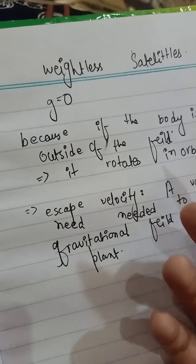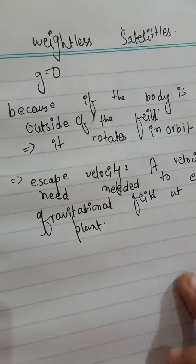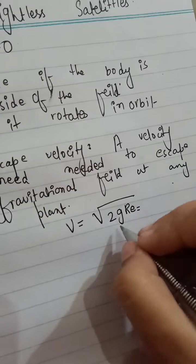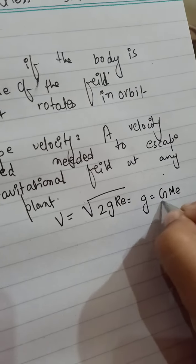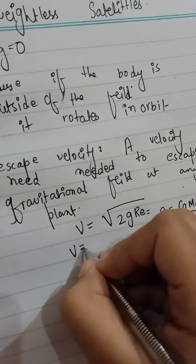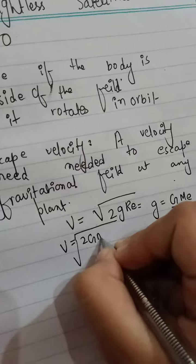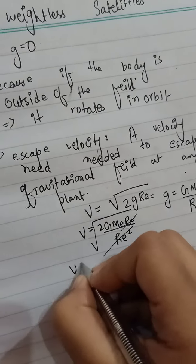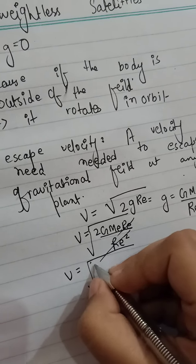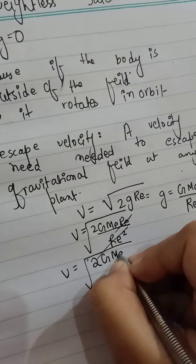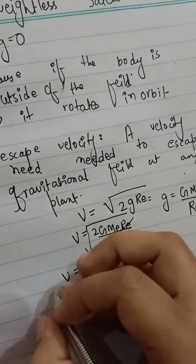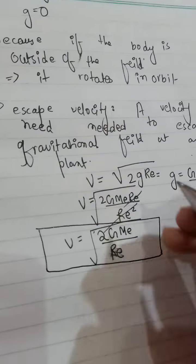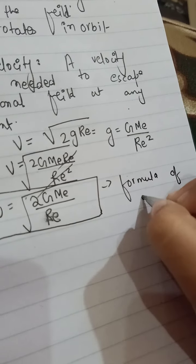Escape velocity depends on gravitation — that's the main point. The escape velocity formula is √(2gR_e). As you know, gravity g equals GM_e over R squared. Substituting, the R_e squared cancels and one R_e remains, so the formula of escape velocity is √(2gM_e / R_e). You can find the escape velocity of any planet through this formula.